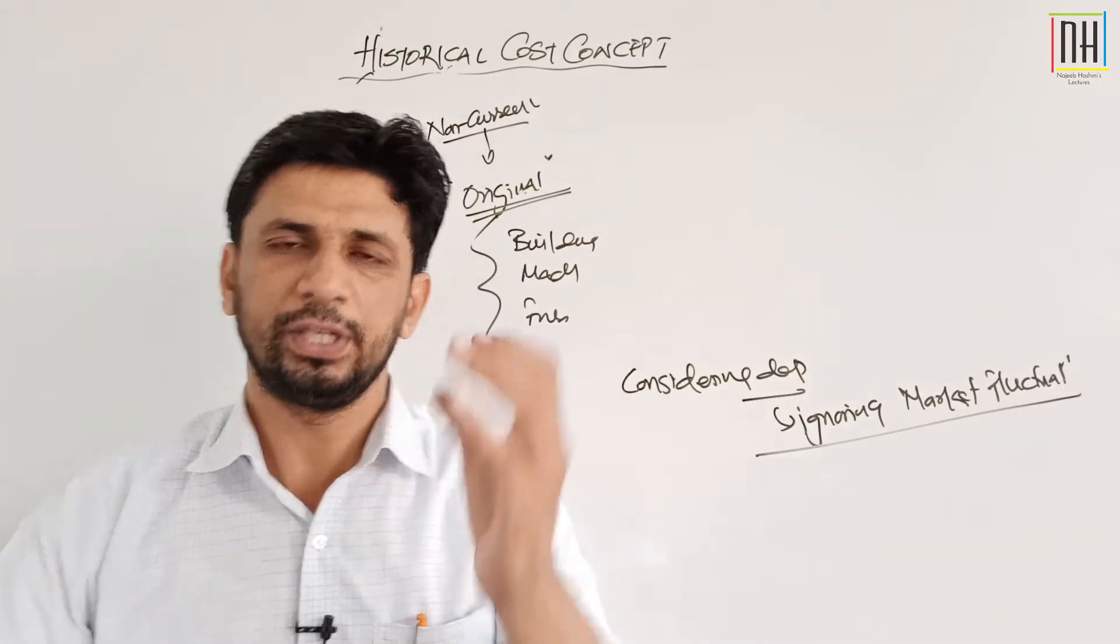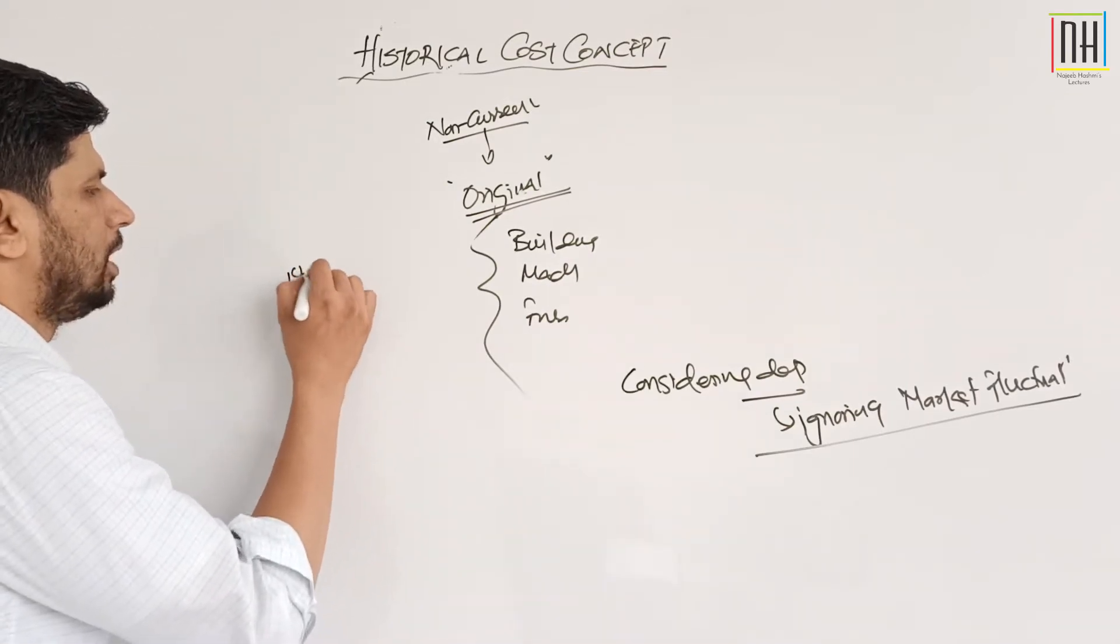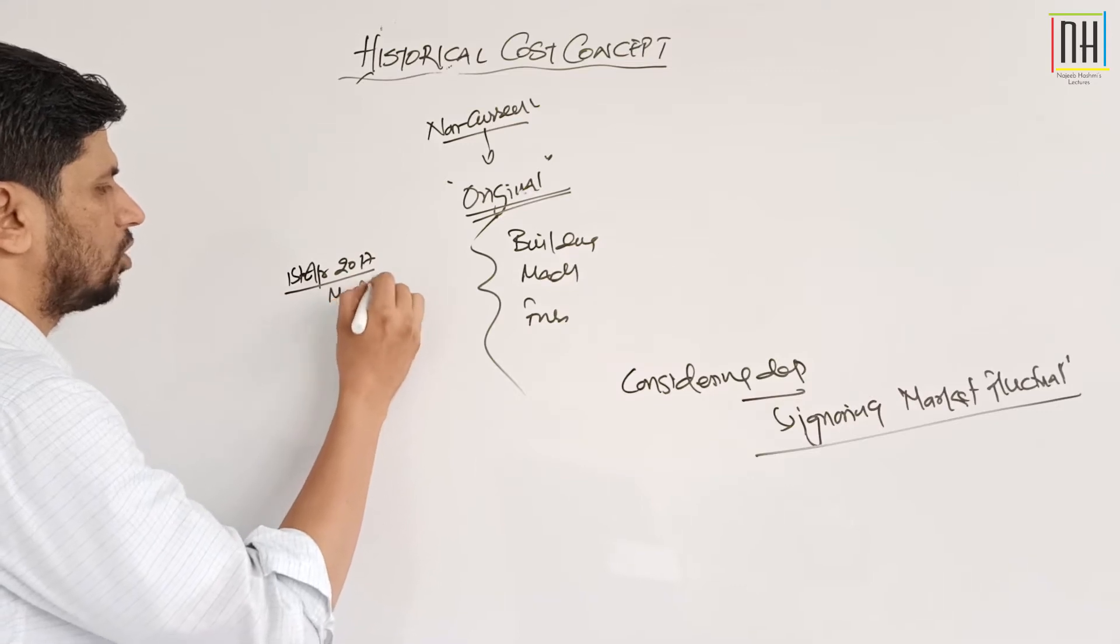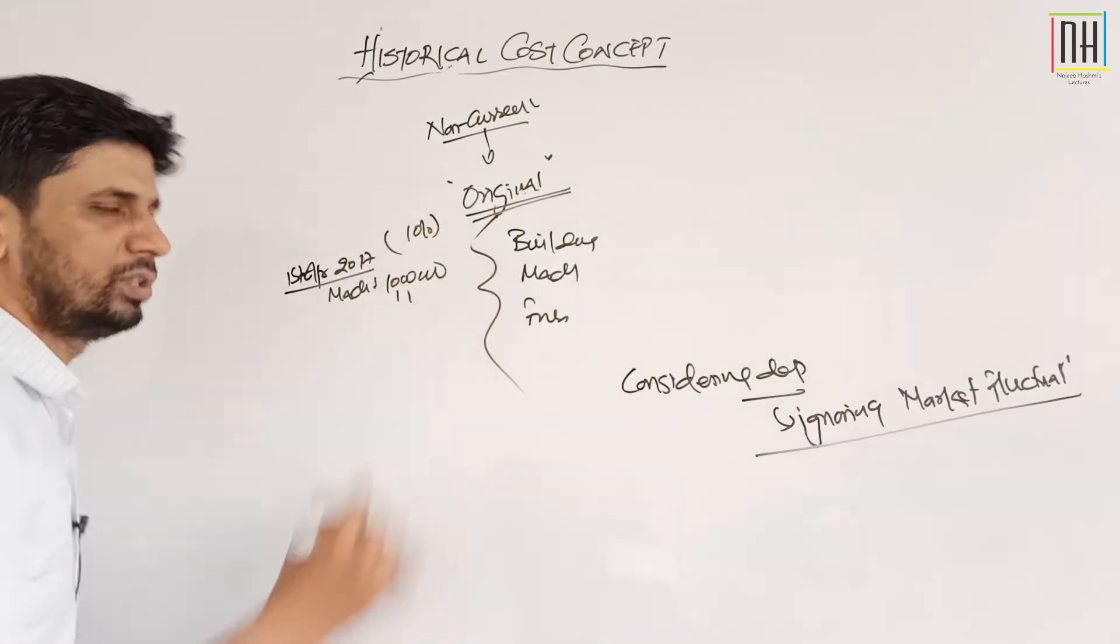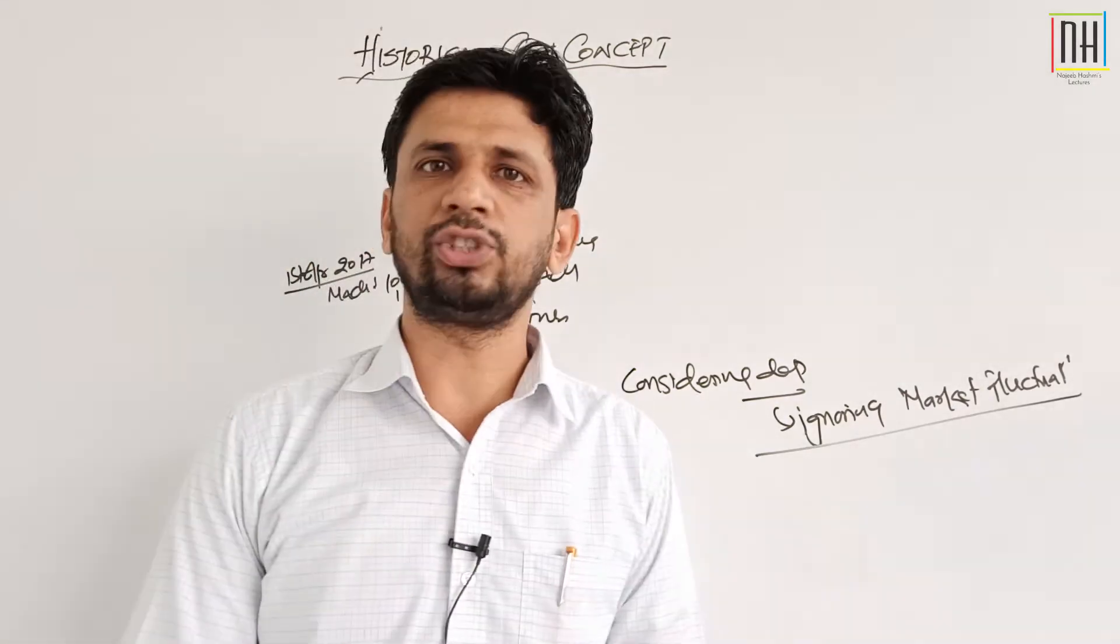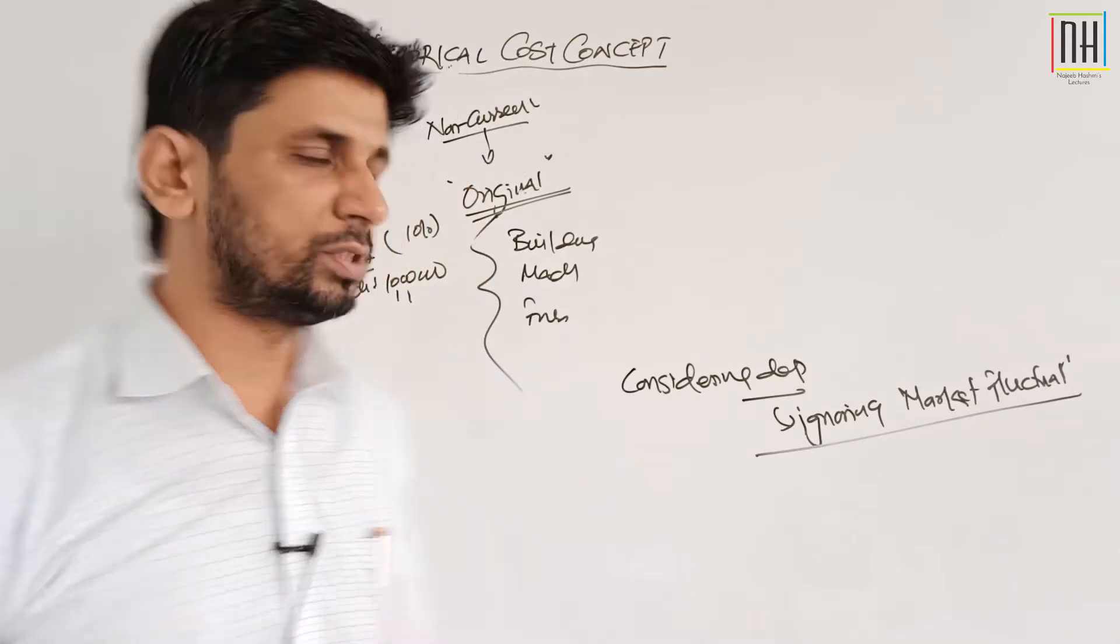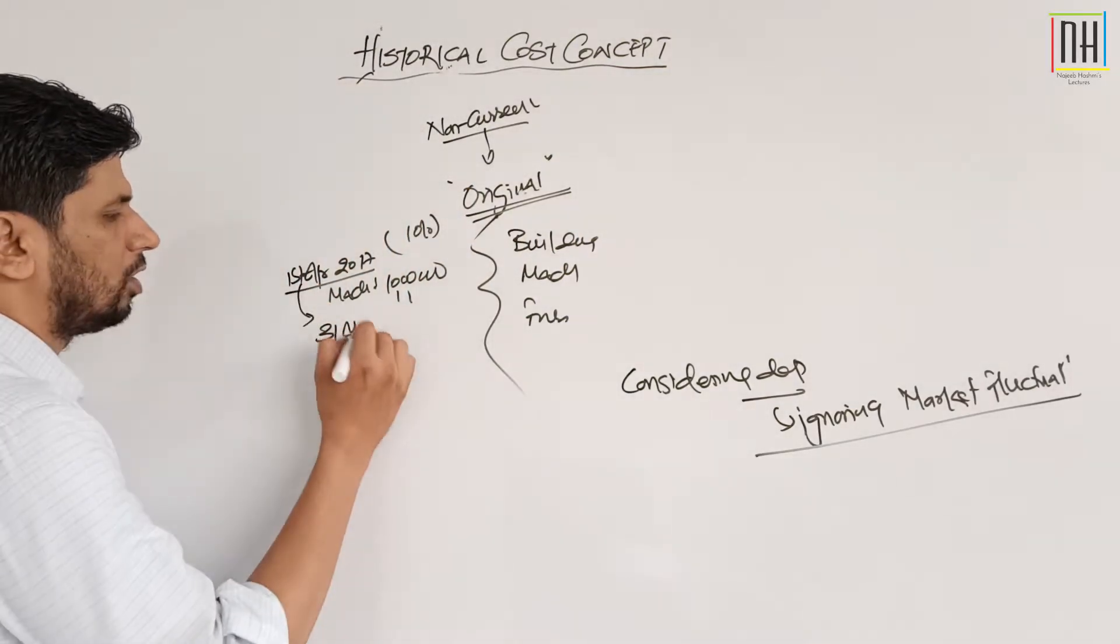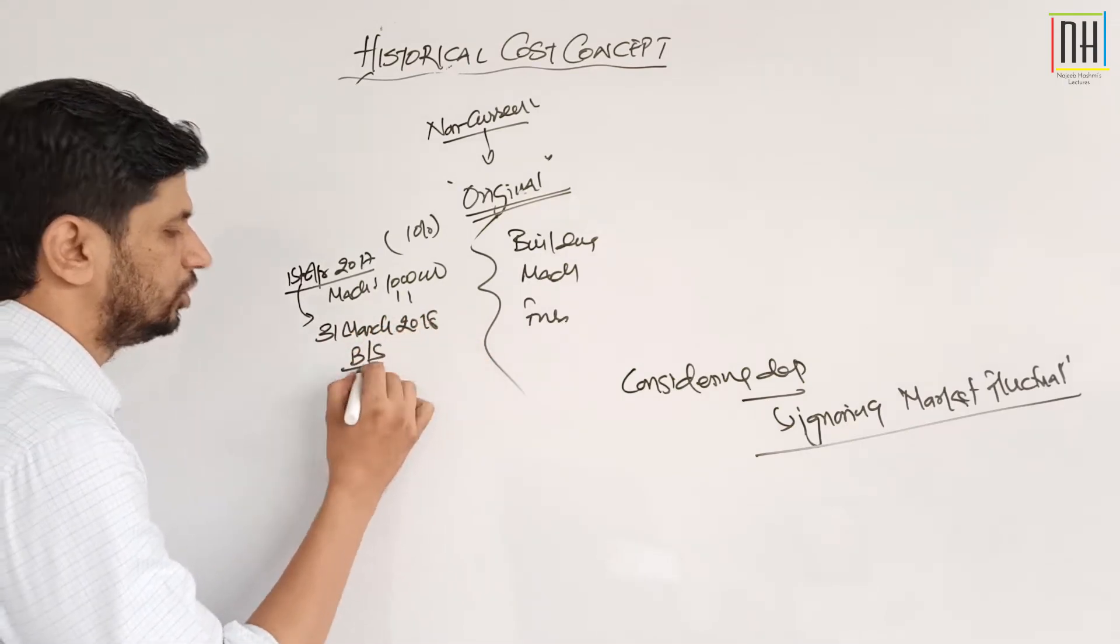Let's suppose we purchased a machine on 1st April 2017 and cost of that machine is rupees 10 lakhs. Depreciation is 10 percent. Depreciation to charge karna padega as per the accounting period and going concern principle.